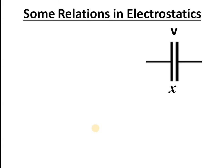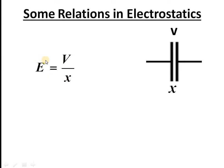In electrostatics, suppose we have two plates with a potential difference V. If the separation between the plates is x, then we relate the potential difference with the electric field using this relation. Electric field E equals potential difference divided by the separation. Here, electric field is expressed in terms of potential — this is the scalar form of the electric field.